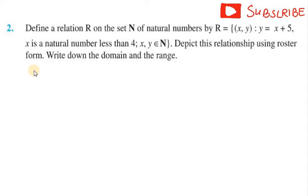R equals the set of ordered pairs (x, y) where y equals x plus 5, x is a natural number less than 4, and x, y belong to N. N is the natural numbers.